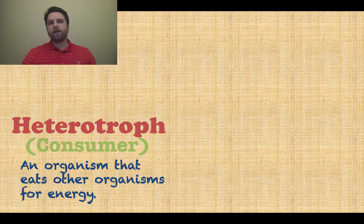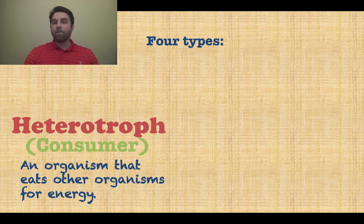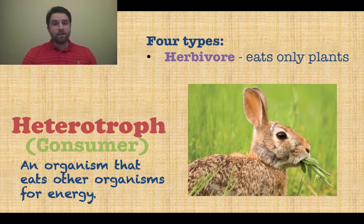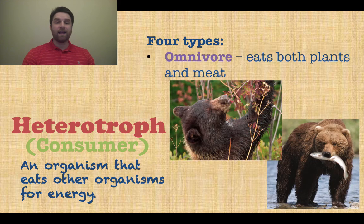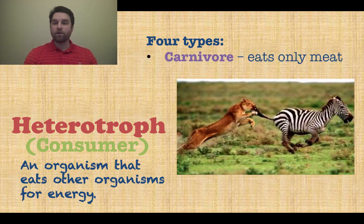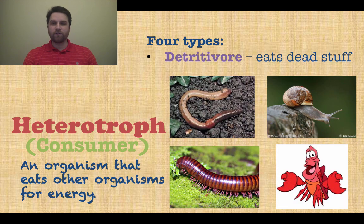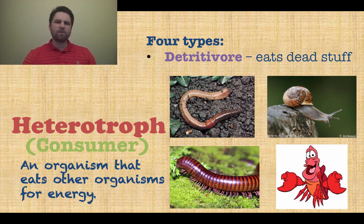After autotrophs we have heterotrophs, which are your consumers — they have to eat other organisms to get their energy. There are four main types: herbivores, which only eat plants; omnivores, that eat both plants and meat, like bears; carnivores, which eat only meat; and detritivores, which eat dead stuff — snails, earthworms, millipedes, and even crabs. That's the one most people don't remember, but the other three you're probably familiar with.